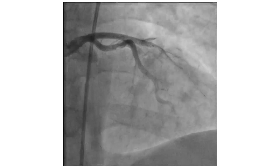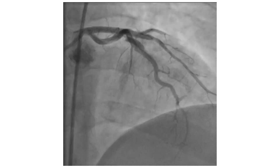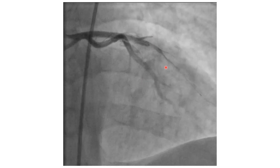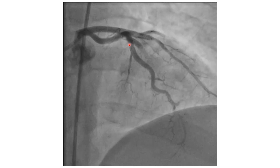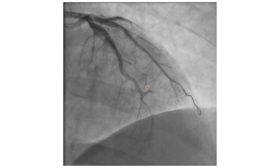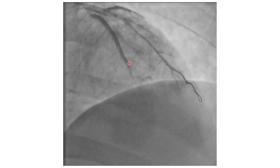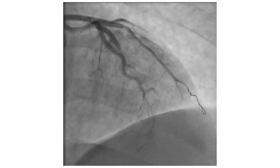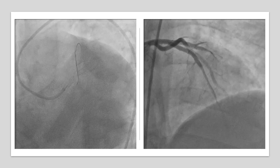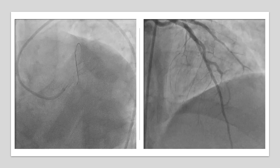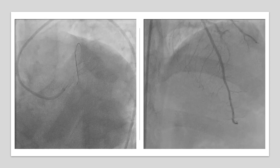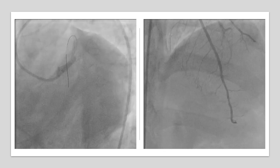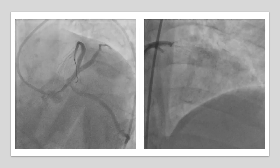The cranial view shows the stent going from the LAD into the diagonal, and this is the proper course — this is the LAD. In this case, the operator managed to wire and distend the proper LAD. And this is the result.